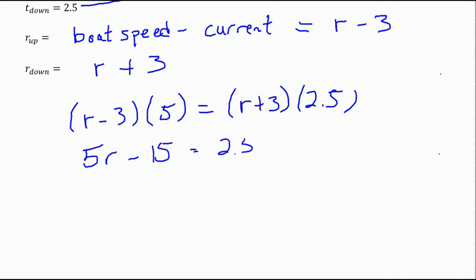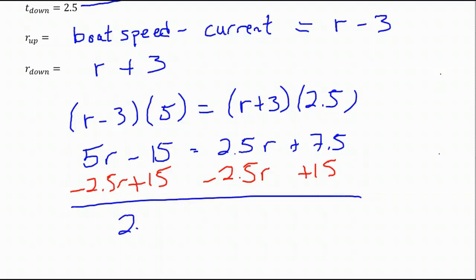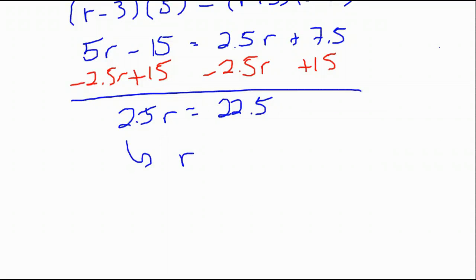And now we just have a linear equation. We're going to multiply out and then isolate the variable. Multiplying through, and then we're going to add over the 15 and subtract the 2.5r to get the simplified equation: 2.5r equals 22.5. Once we isolate our variable, we're going to divide by that coefficient to get that r equals 22.5 divided by 2.5. Compute that out and you're going to see that you get 9.